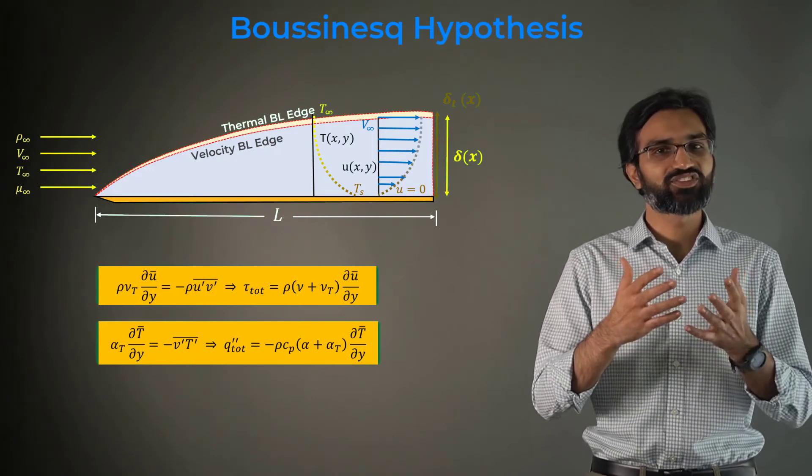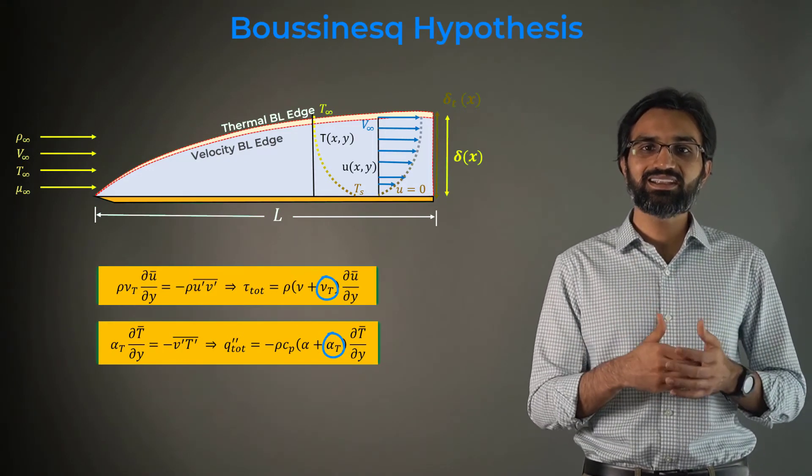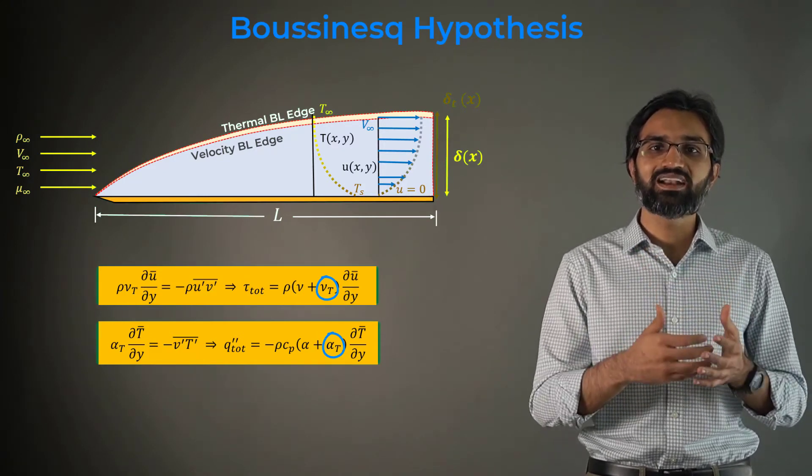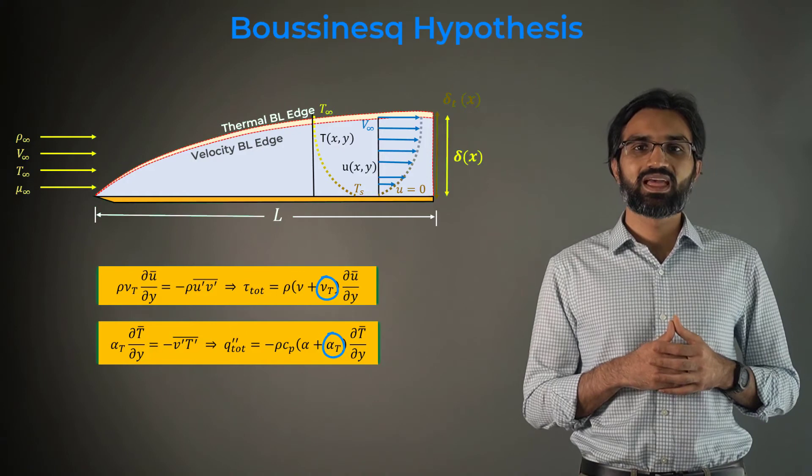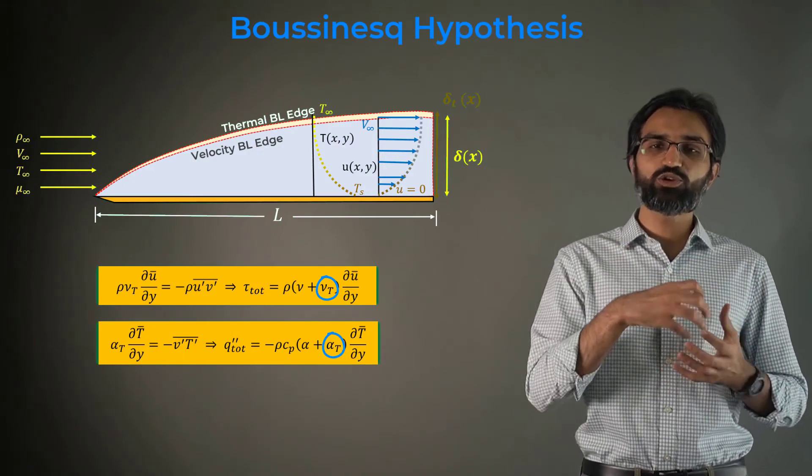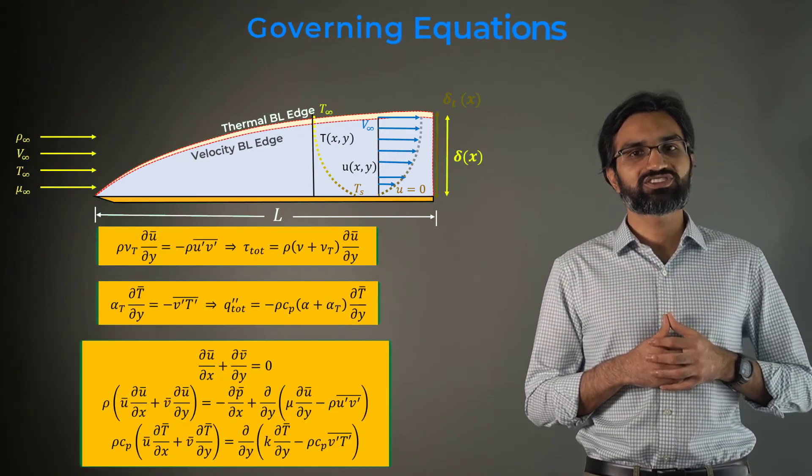These relationships are as follows. Here nu_t and alpha_t are eddy viscosity and diffusivity respectively. Substituting these back into the energy equation, we obtain the final turbulent boundary layer equation.